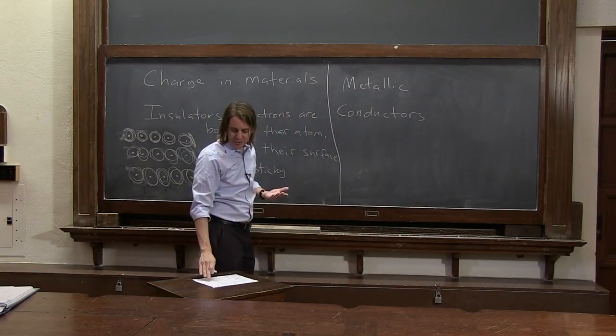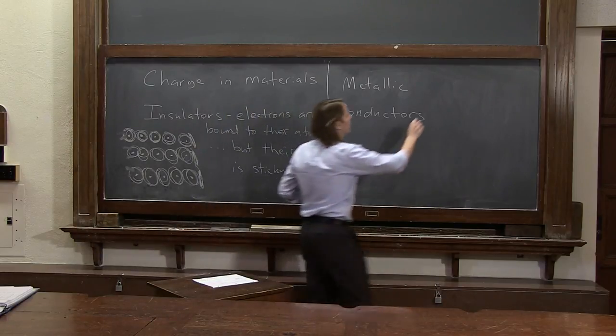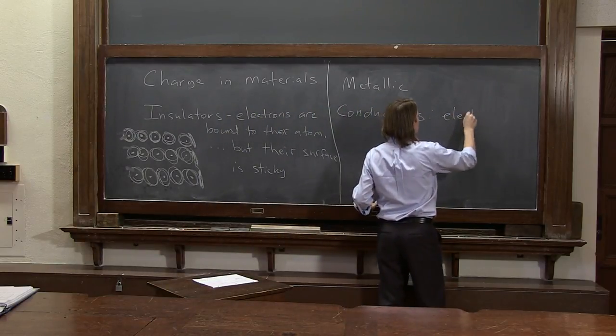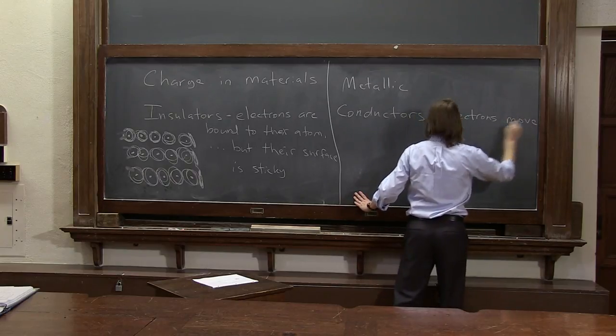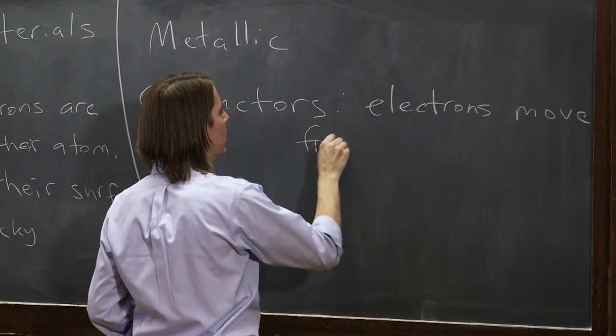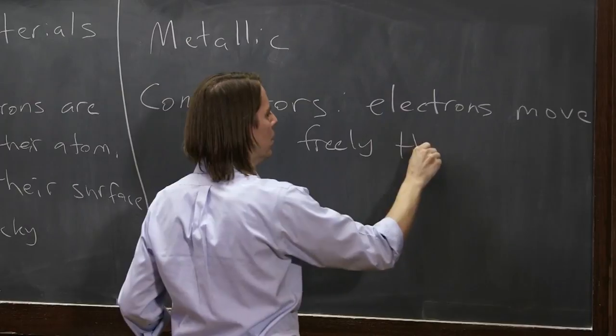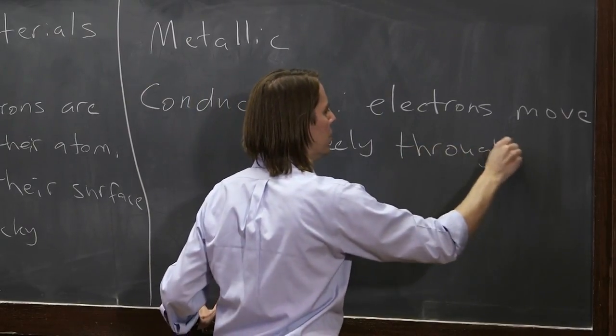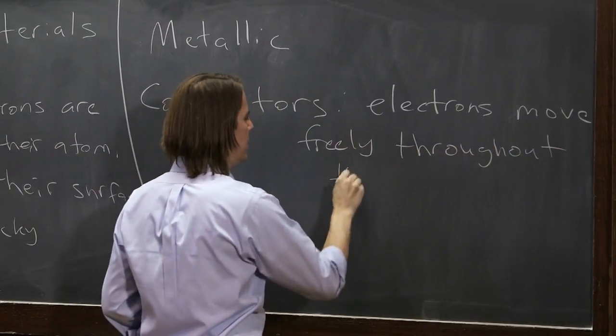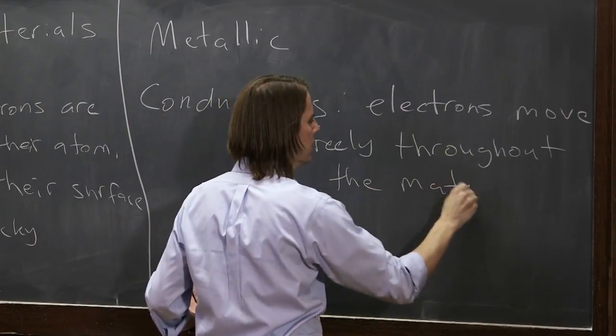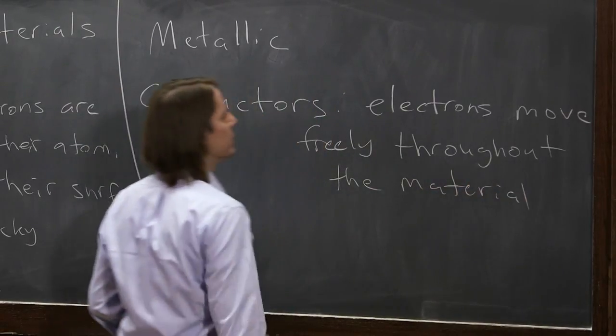So in a metallic conductor, the electrons move freely throughout the material.